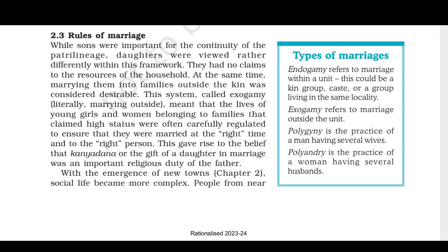So, in early societies what kind of rules existed for marriages — what kinds of marriage relationships existed within families? Like today, some families have marriages within blood relations. For example, in Islam, marriages within the family and blood relations are allowed. But in Hinduism, marriages between cousins are not permitted. So let's look at what different systems existed.